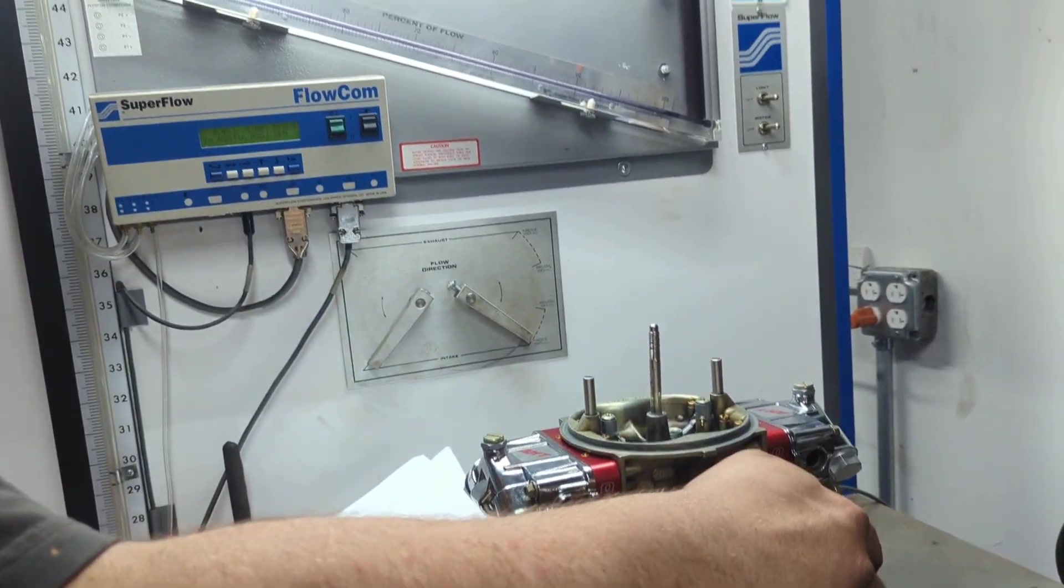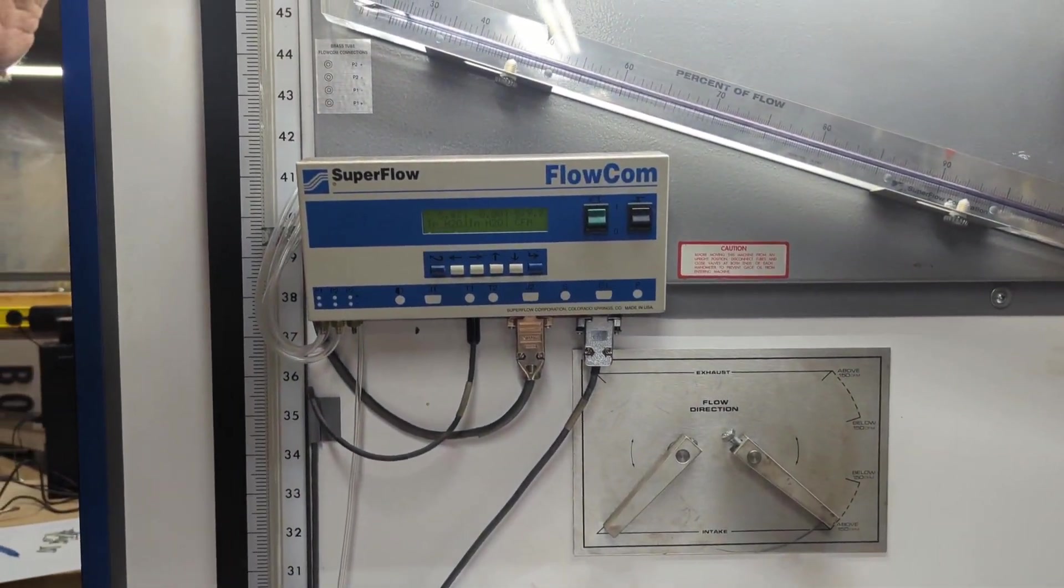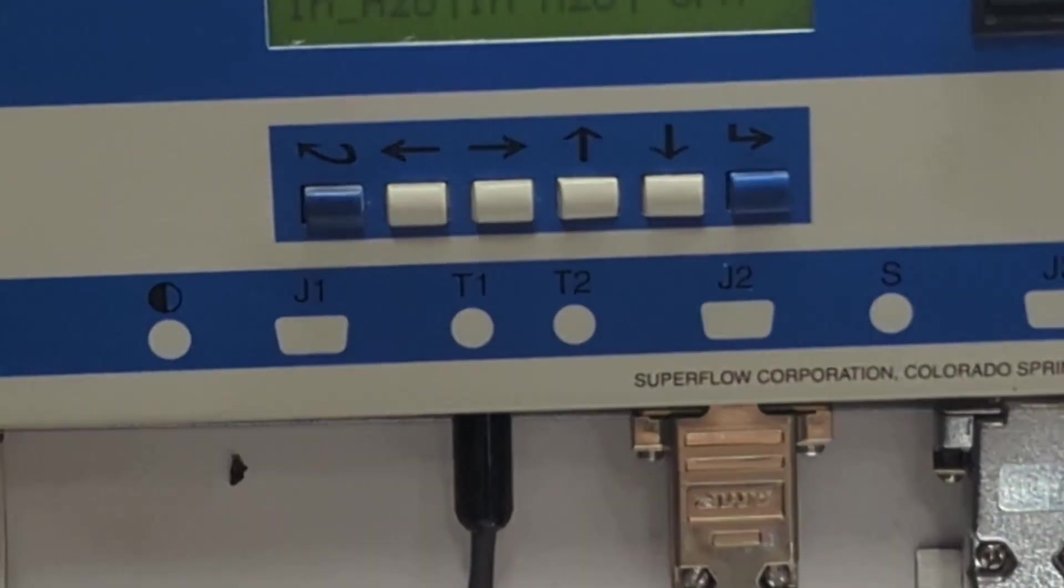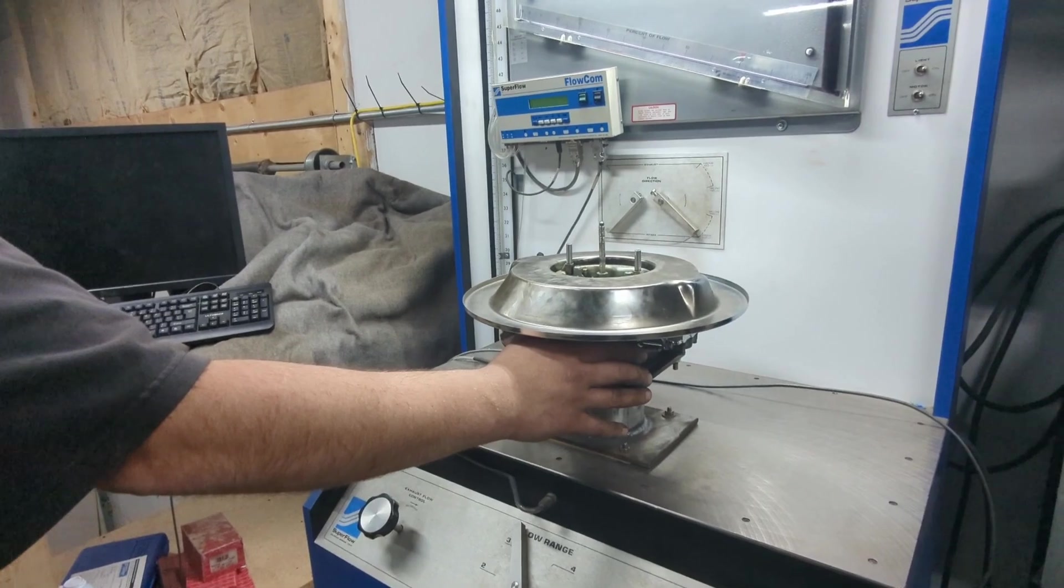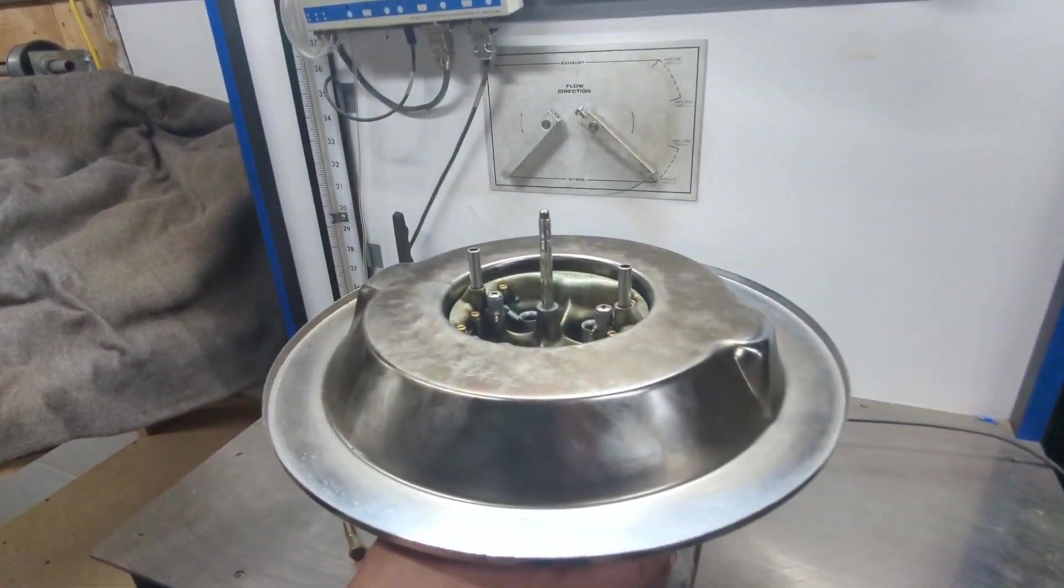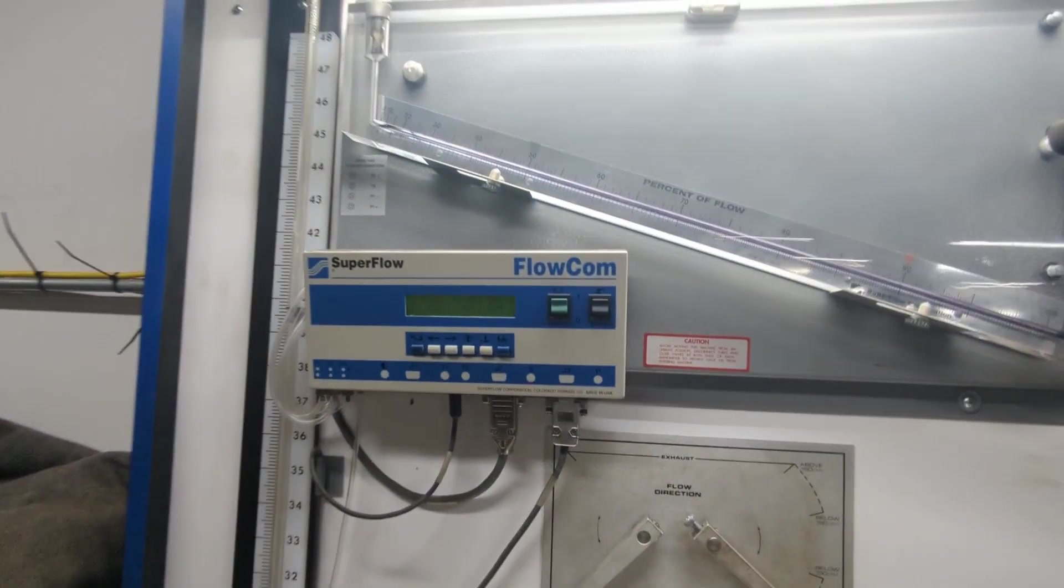We did a quick baseline without the drop base and then we added the drop base on, because this contoured inlet is supposed to fill the gap between the drop base and the top of the carburetor.